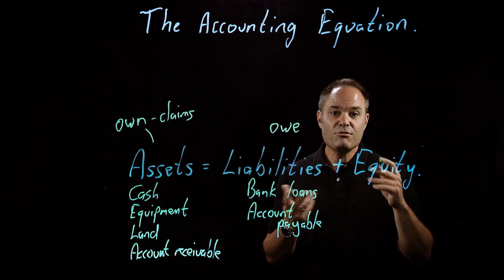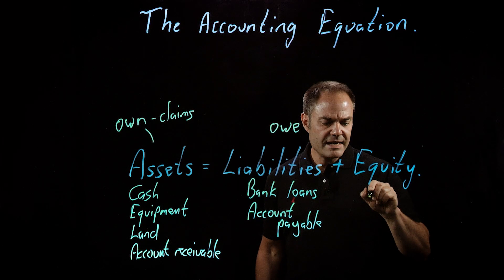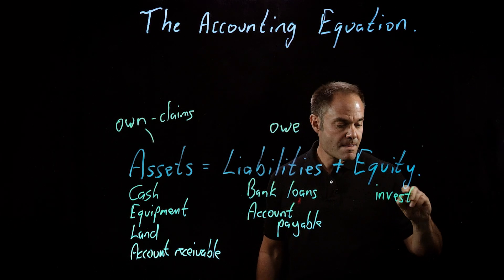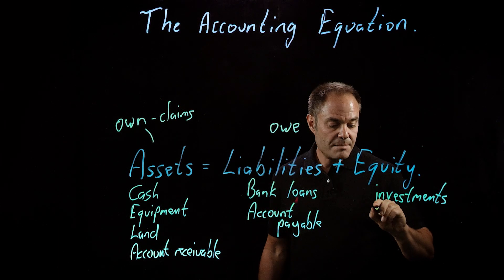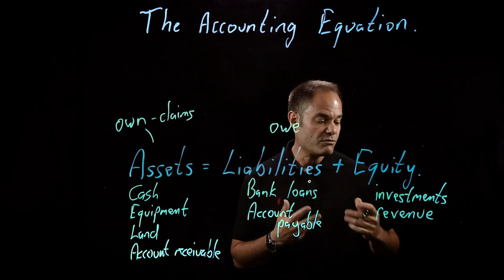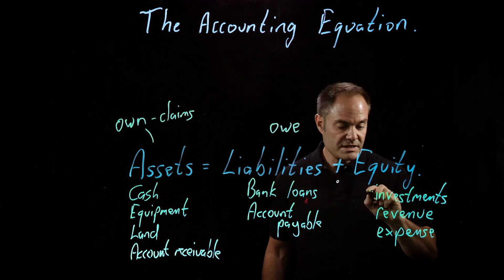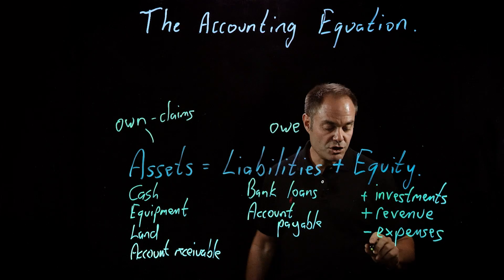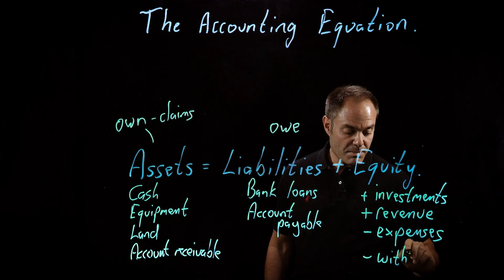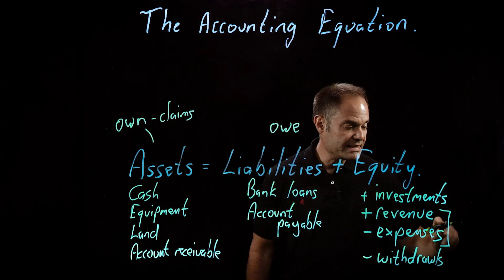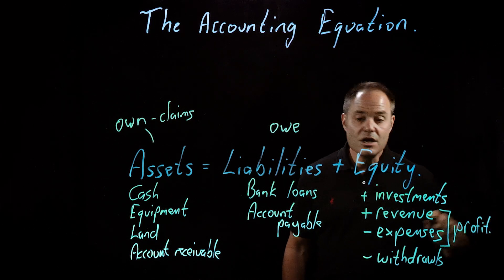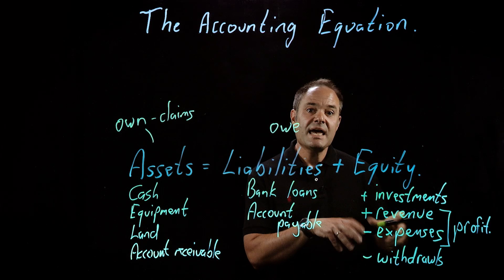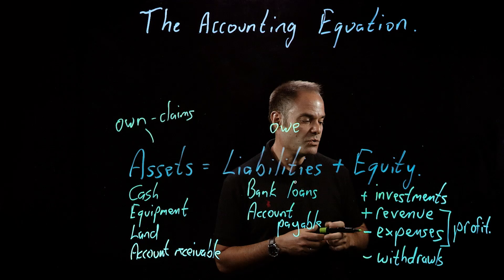The other way we can think about equity is by breaking it into its components. In a sole proprietorship — a business with just one owner — equity is made up of investments, money that the owner has put into the business, plus revenue, money that the company earns from doing whatever it does, minus expenses, expenditures made in order to earn revenue, and then minus withdrawals, money taken out by the owner. Revenue minus expenses is, of course, profit. So we can think of equity as the money the owner put in, plus any profit the company earned, minus any withdrawals.